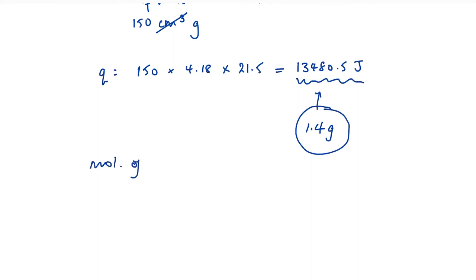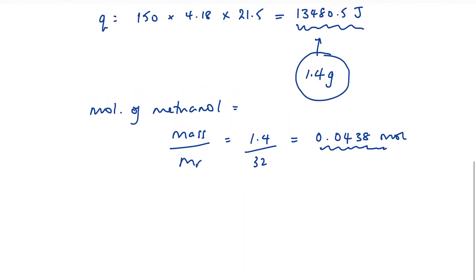Moles of methanol is going to equal mass over molar mass. So that's 1.4 and the molar mass for methanol is 32. So now we're getting somewhere: 0.0438 moles. So this is how much fuel we actually burnt. So I can scale it up. If I know how much energy I get from 0.0438 moles, I can figure out how much I'm going to get for 1 mole. I want my answer in kilojoules per mole. So scaling up, 1 divided by 0.0438 multiplied by the amount of energy, 13,480.5 comes to 308,125 joules per mole. And then to convert that to kilojoules, all I need to do is divide by 1000. So 308.1 kilojoules per mole.